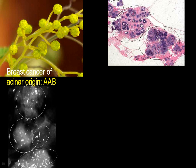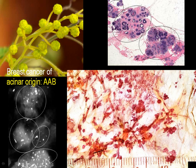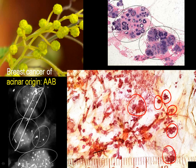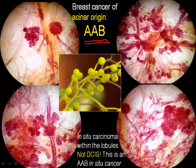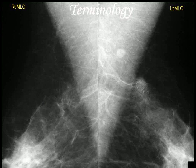Practical example: you find this, you put the core biopsies into it, you get the diagnosis — DCIS. It's not. Here is the conventional histology, and dear colleagues, here are the TDLUs, full of carcinoma. AAB, grade 1, not DCIS.